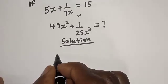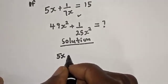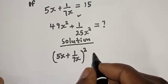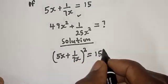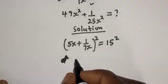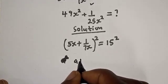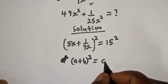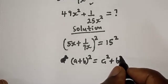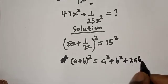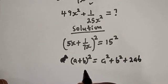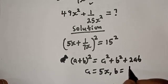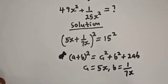Let's square both sides. So 5s plus 1 over 7s, all squared, is equal to 15 squared. Take note that if you have a plus b squared, this is equal to a squared plus b squared plus 2ab. From here, a is equal to 5s and b is equal to 1 over 7s.